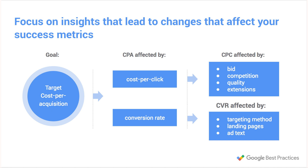In this example, target cost per acquisition is probably going to be affected by cost per click and conversion rate. When you're putting together reports, you want to focus on things that either affect cost per click or conversion rate, and then layer it back to your main primary metric. It's a simple enough concept, but it's worth reinforcing — it's really important to keep that main success metric front and center in your mind.